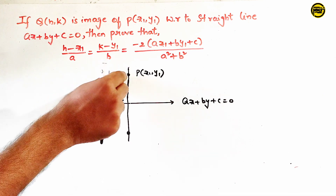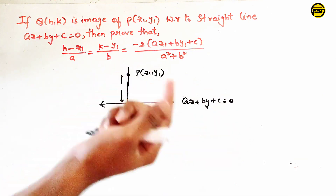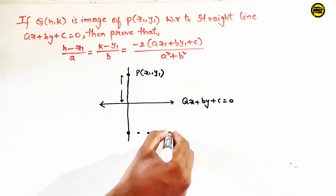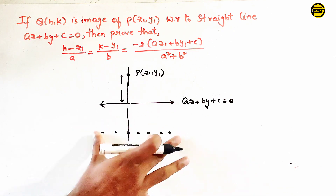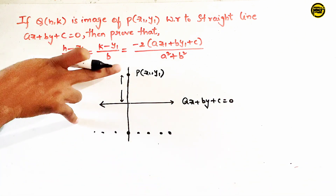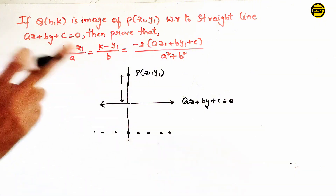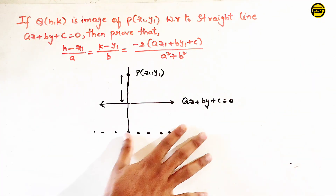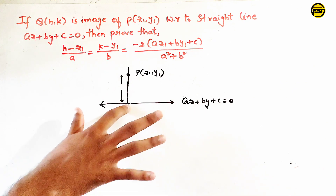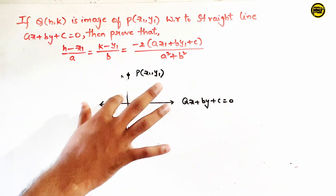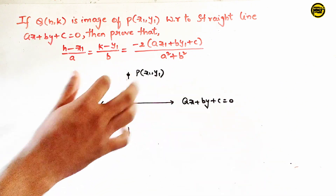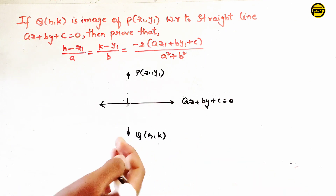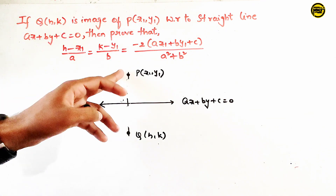The two sides are in the same direction. At the same distance — if we have the same distance in the same direction, then that is the image. The point is the image.